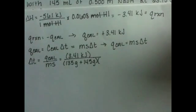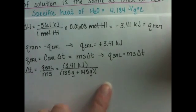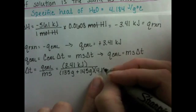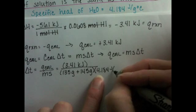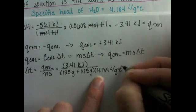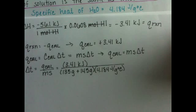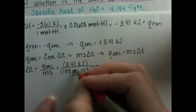The specific heat of the solution is the specific heat of water, 4.184 joules per gram degree C. You can see that your grams units are going to cancel out really nicely.